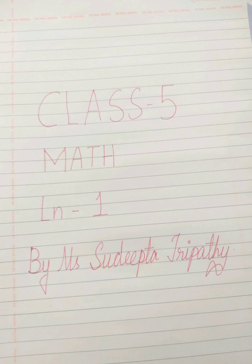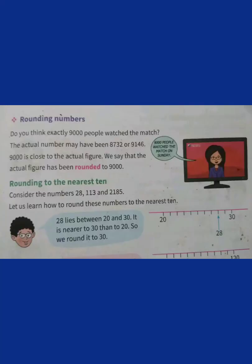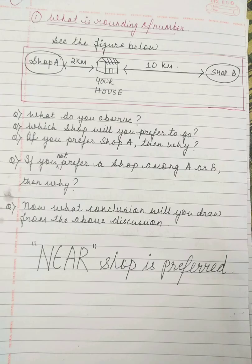Hello children, hope you all are fine and safe at home. The next topic in lesson number 1 is rounding of numbers. Let us see your house. Near your house, we have two shops, shop A and shop B.